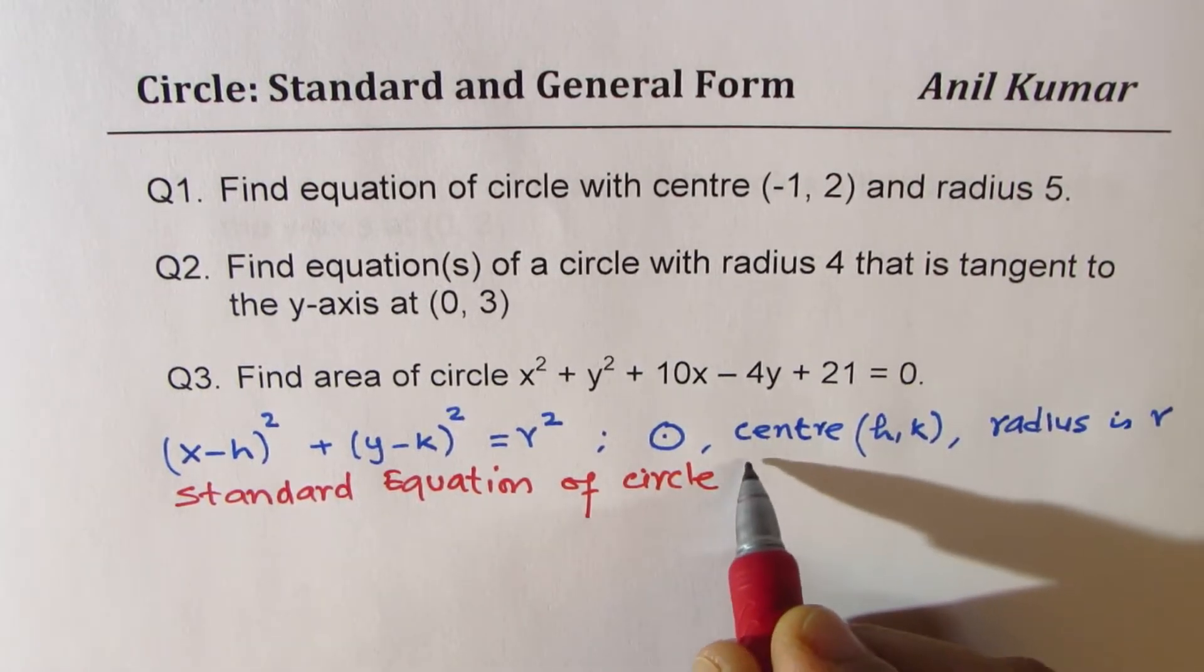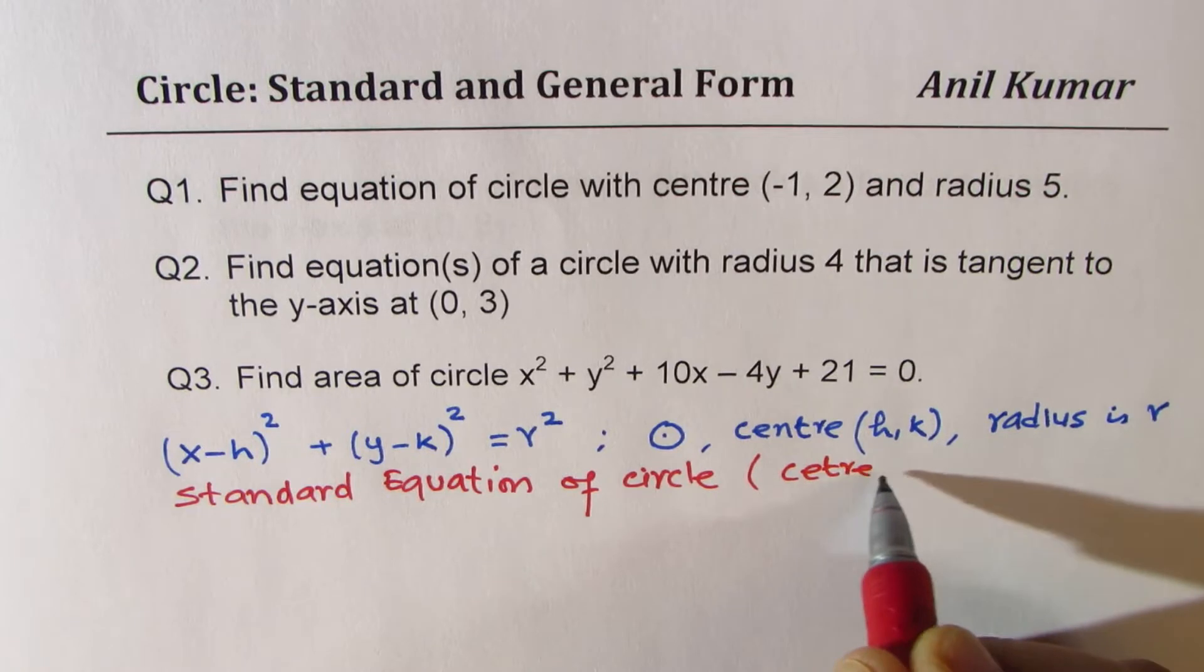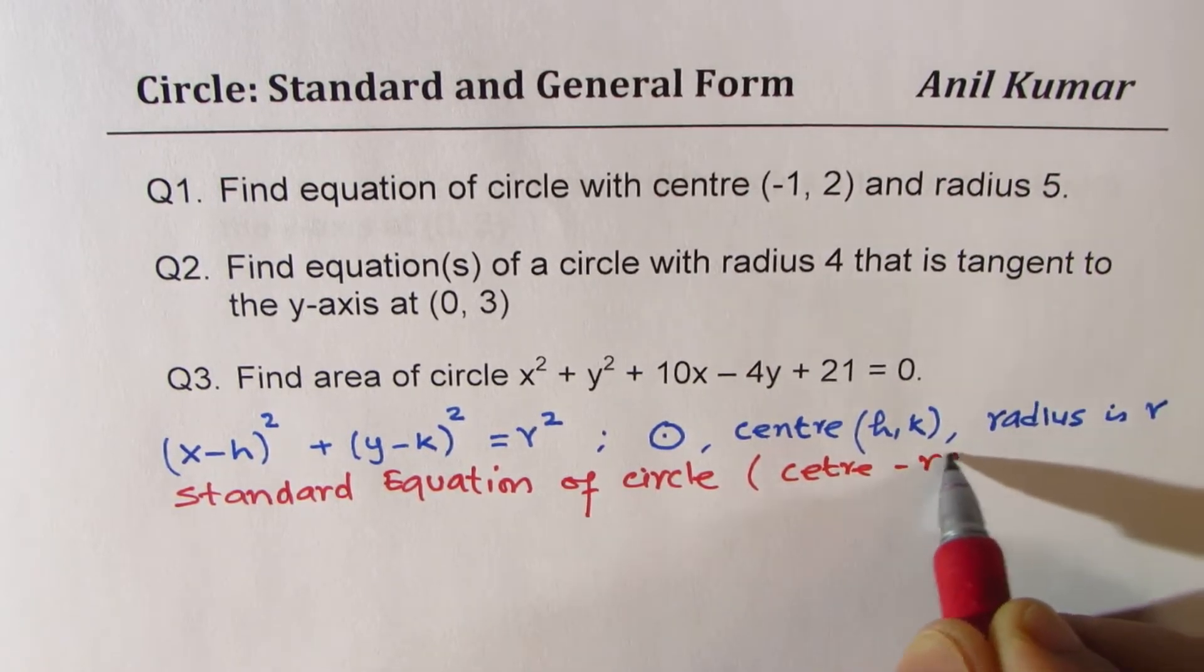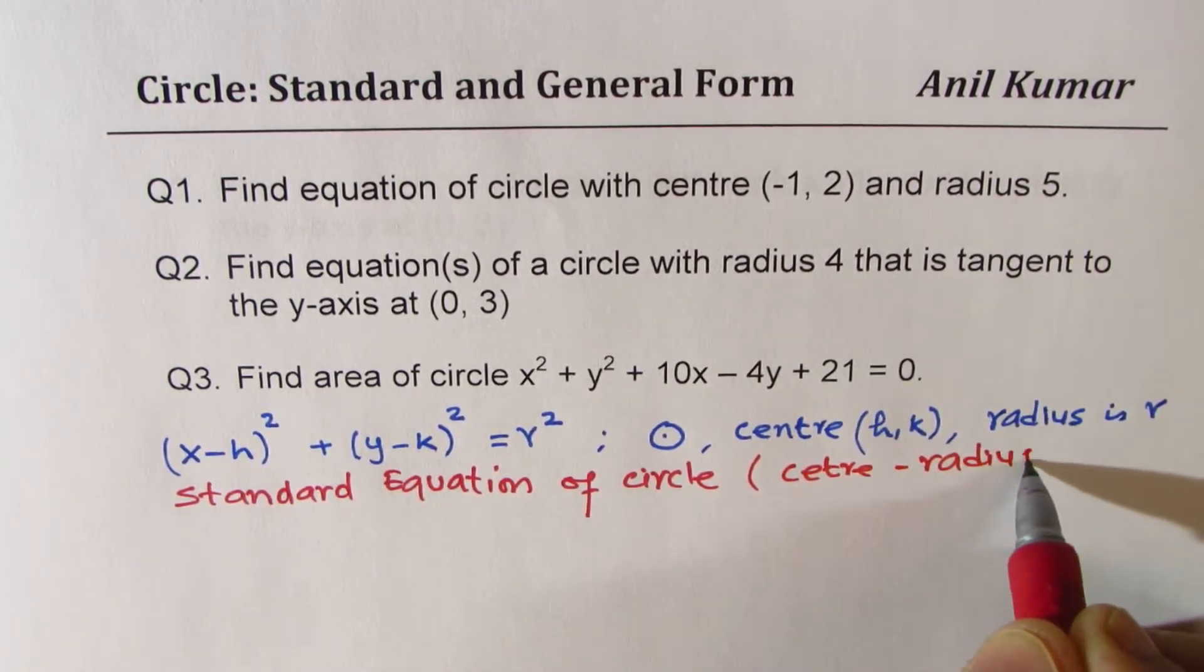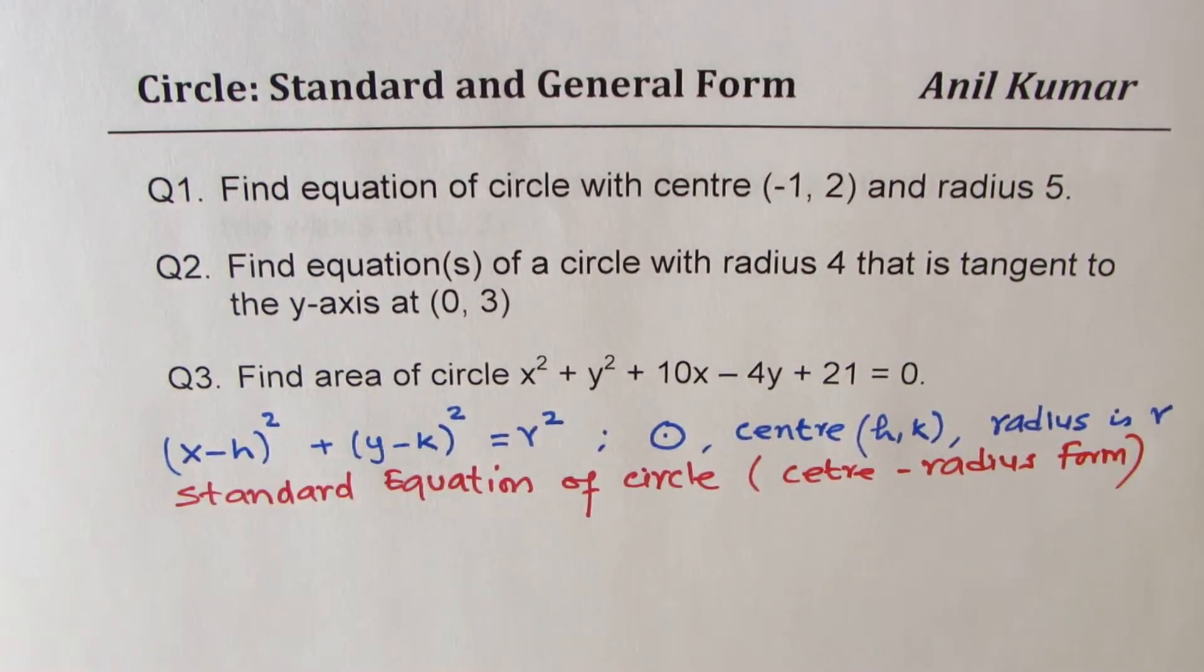We also sometimes call it as center-radius form, as it gives you directly the value of the radius and also the center point of the circle. It's a very helpful equation. Now let us answer these questions.